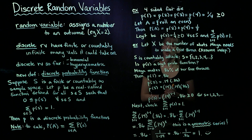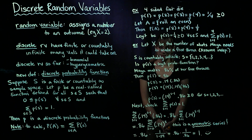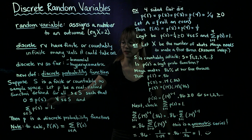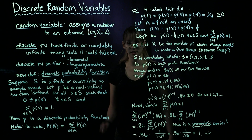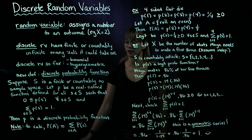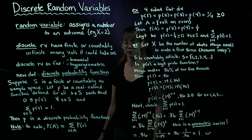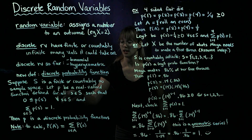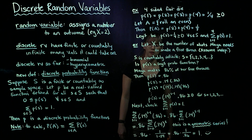So now we're going to have a new definition, which is discrete probability function. Suppose S is a finite or countably infinite sample space. We're going to have little p be a real-valued function defined for all elements in our sample space, such that the probability of any element — p of s — is greater than or equal to 0 for any element in our sample space. And if we take the sum of all the probabilities, we get 1. If these two things hold, then p is a discrete probability function.